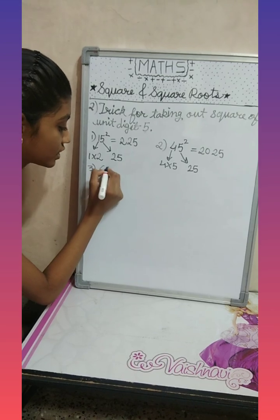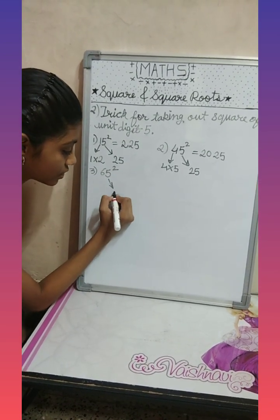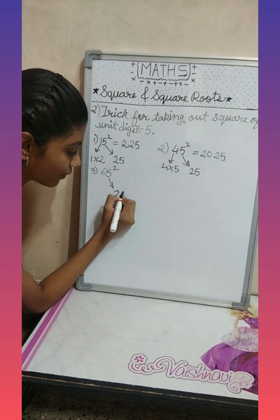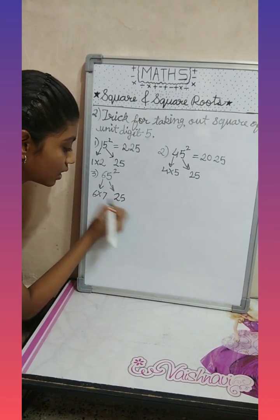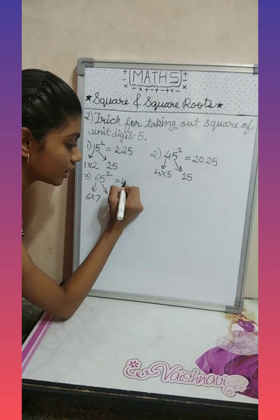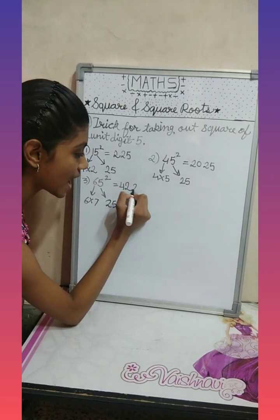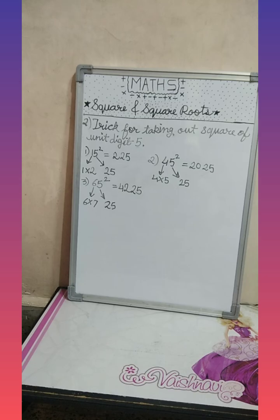Let's take square of sixty-five. As we did the first two sums, we will take the square of five. We will multiply six with its next number, with seven. Six sevens are forty-two, and five square we will write as it is. It was a simple trick.